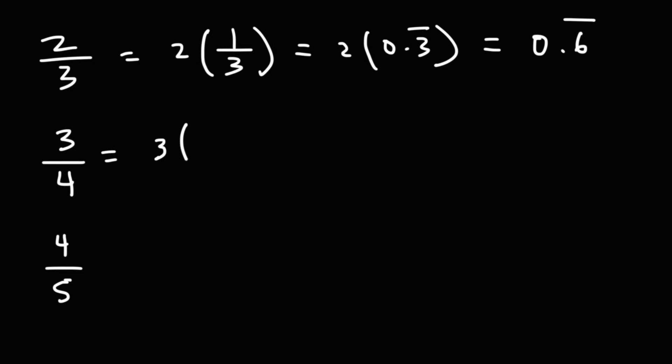Now 3 fourths is basically 3 times 1 over 4. 1 over 4 we know is 0.25. 3 quarters is 75 cents. So 3 times 0.25 is 0.75.